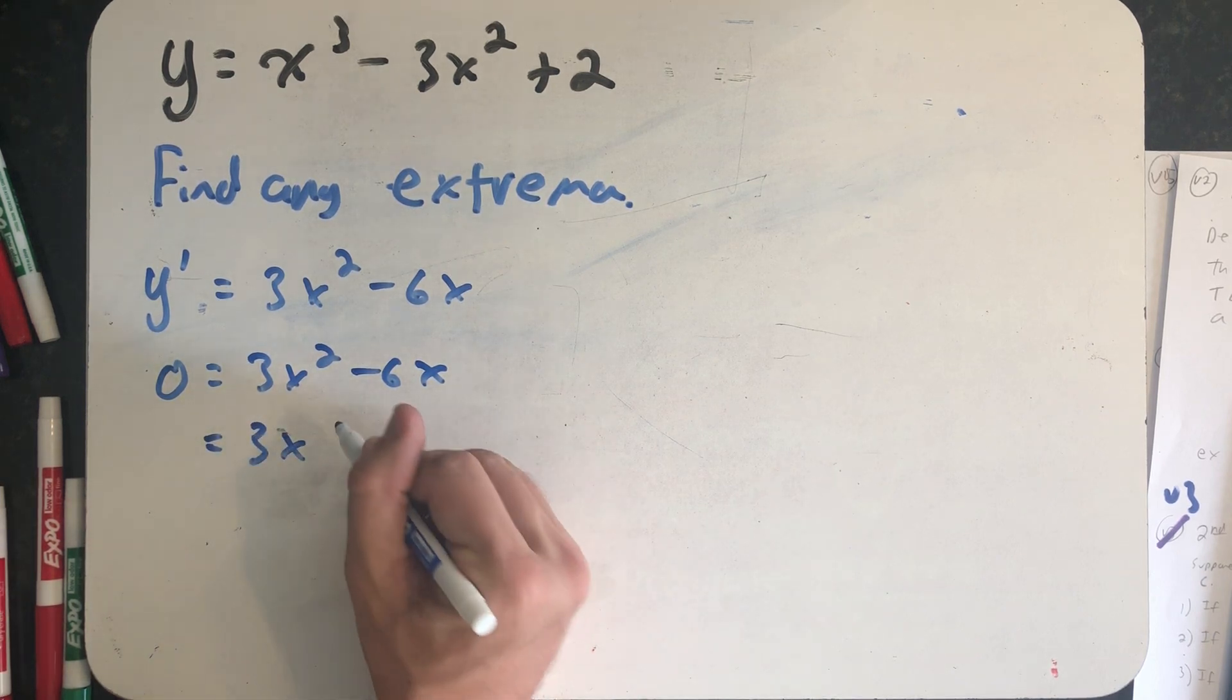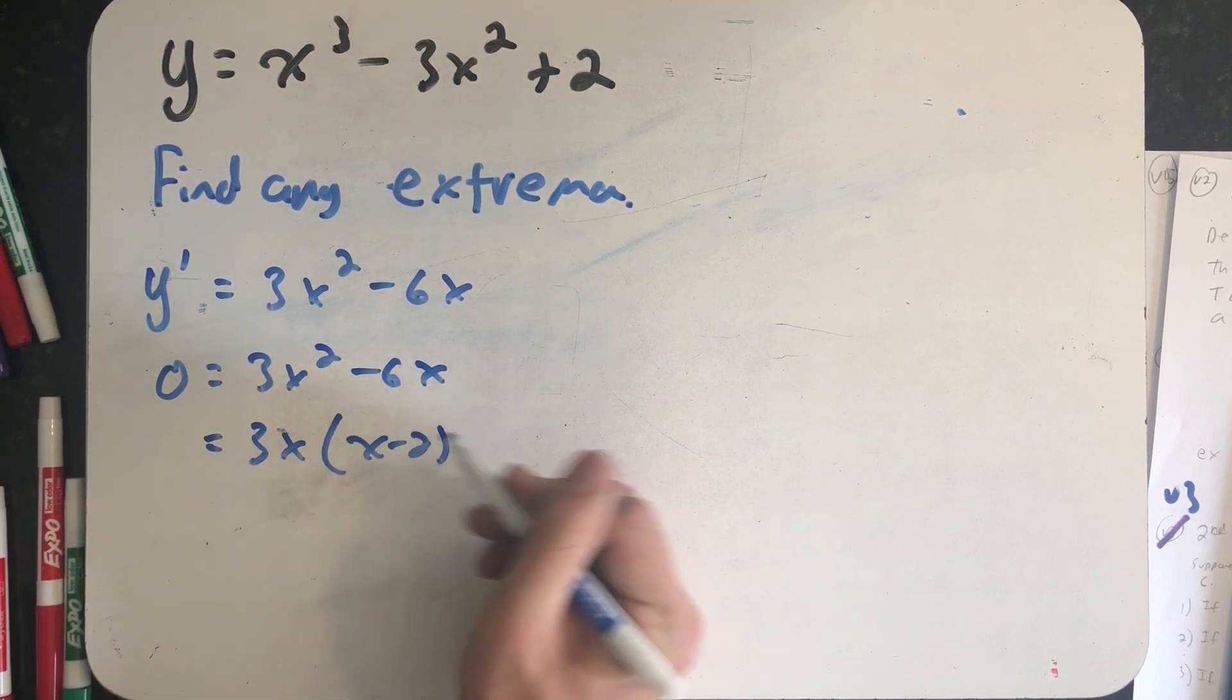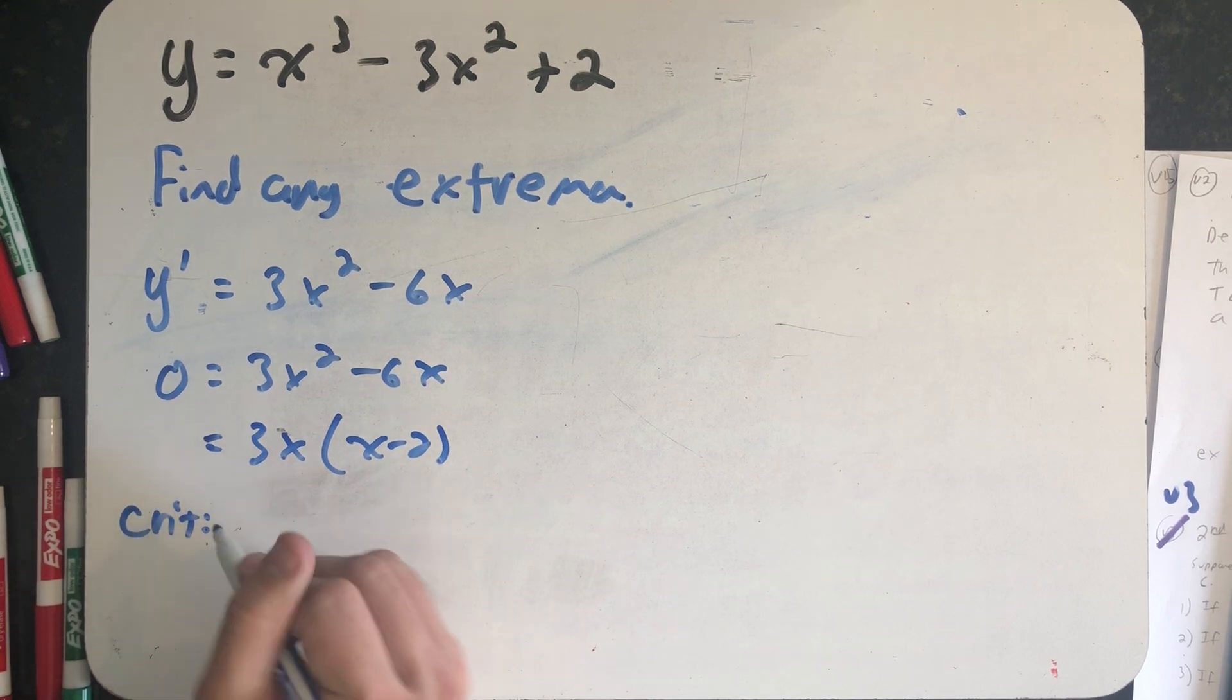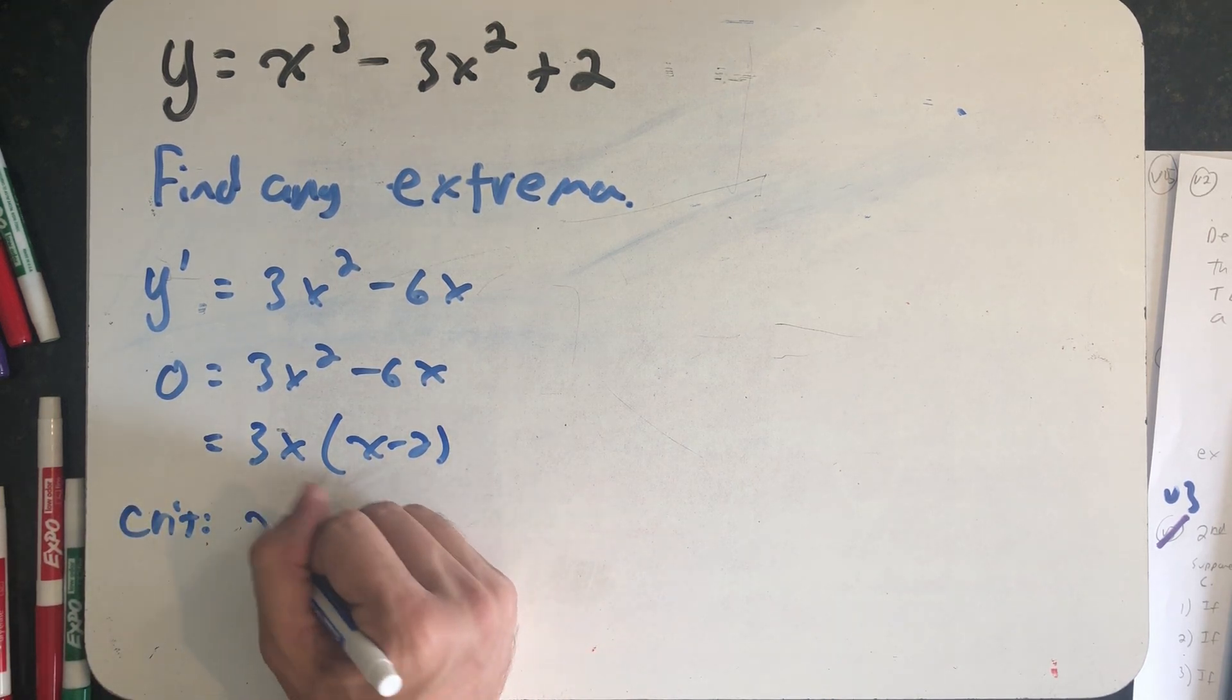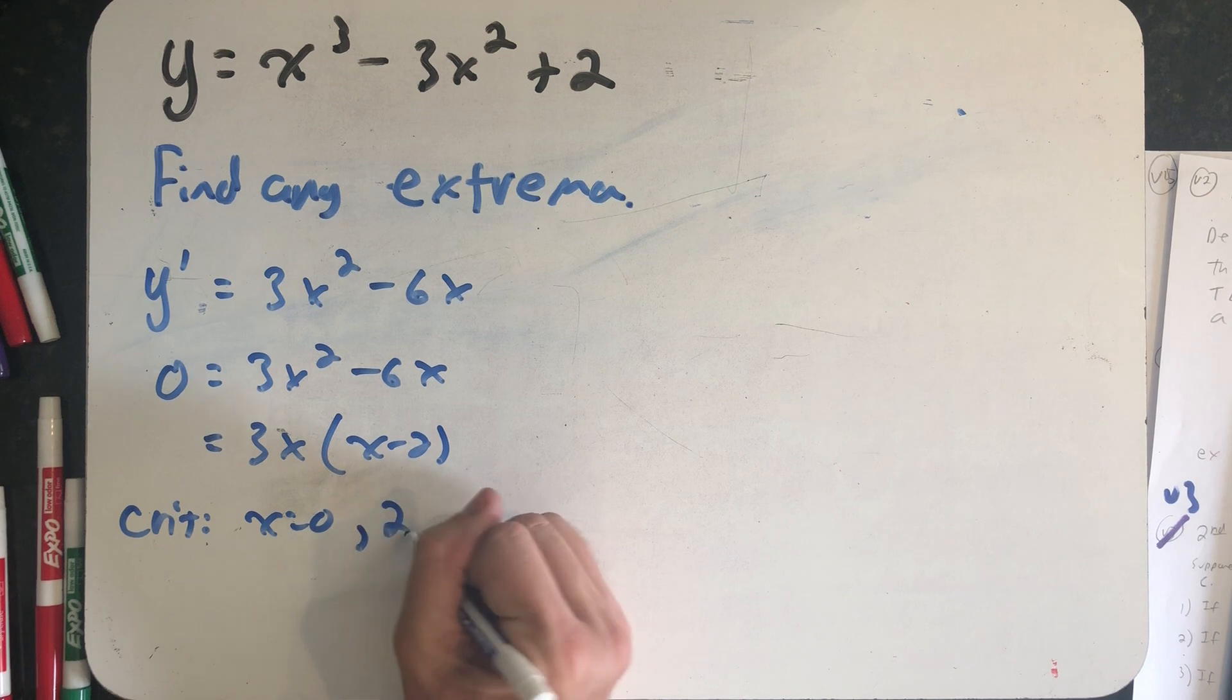I can factor out a 3x. That gives me two critical points. The derivative is equal to 0 at both x = 0 and x = 2.